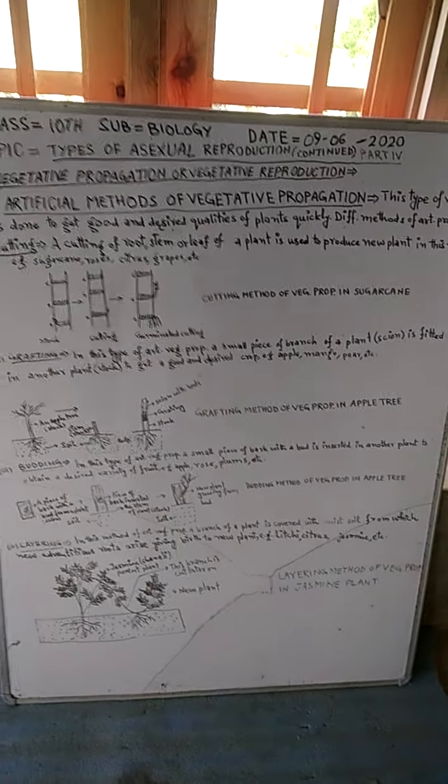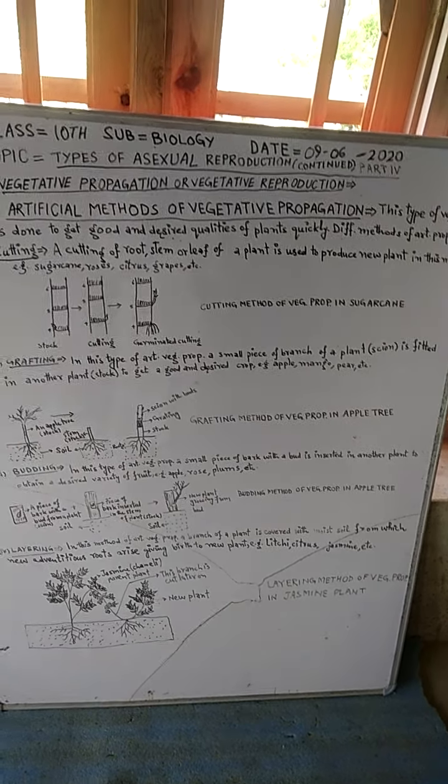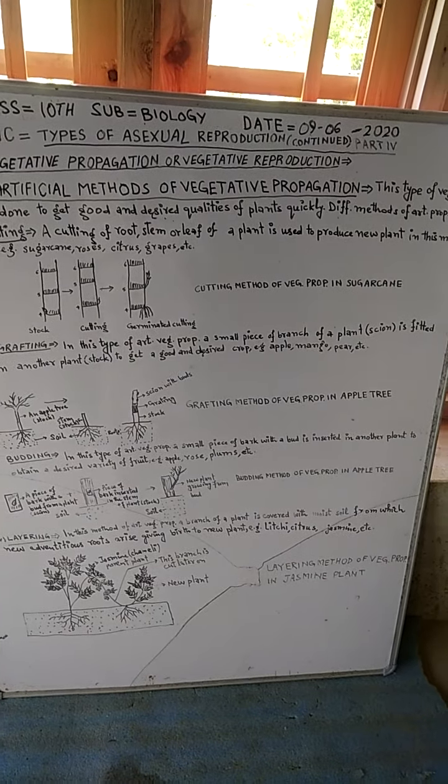a small piece of a branch of a plant is fitted in another plant to get a good and desired crop.